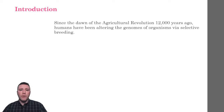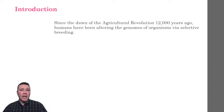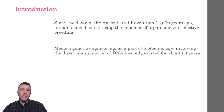About 12,000 years ago, people began settling in fixed places rather than migrating in a nomadic fashion. Growing and raising their own food, instead of searching and hunting for it, led to people selectively pollinating and breeding plants and animals, altering their genomes. This form of evolution, called artificial selection, will be looked at in the next unit. The direct manipulation of genetic material like DNA has only existed for about 50 years.